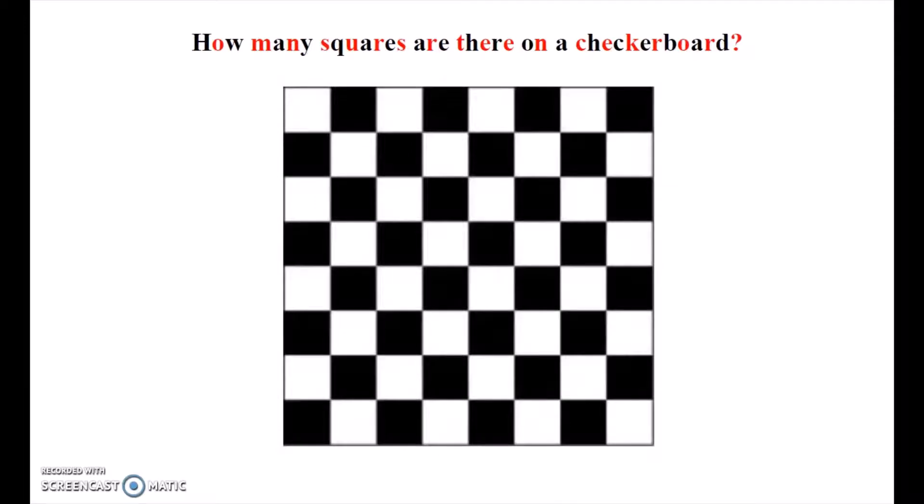Once you realize that there are quite a few squares of different sizes on a checkerboard, this problem suddenly becomes a much more difficult task. There are a lot of squares that are overlapping and of different sizes. If we were just to go through and try to count all of those, it would be very easy to lose track.